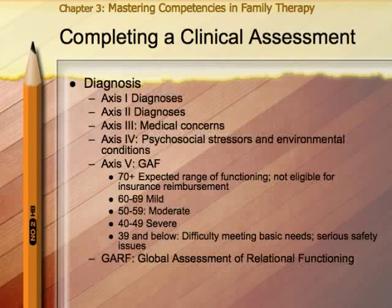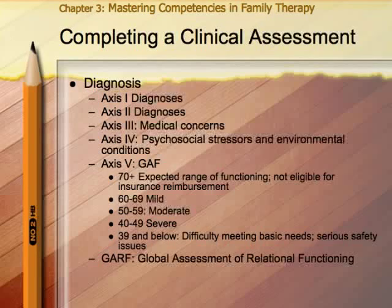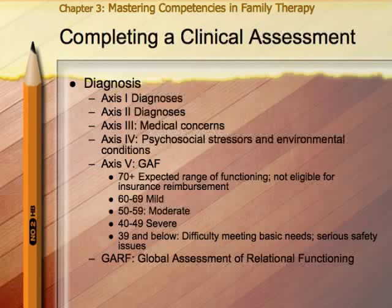Most mental health diagnoses follow the five-axis system in the DSM. Axis I is the focus of treatment with all general mental health conditions. Axis II includes personality disorders and mental retardation. Axis III covers any medical conditions — noted as reported by the client or diagnosed by an MD, since therapists aren't running physical tests. Axis IV covers psychosocial stressors and environmental conditions, such as financial stressors, primary support group issues, difficulty accessing medical services, and legal issues. Axis V is the GAF score — the Global Assessment of Functioning.